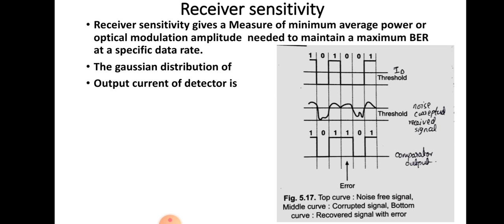A figure is shown here. The top curve represents the noise-free output from a hypothetical detector, where ID is marked as the threshold value used for comparison. The first curve is the original signal itself, which is a stream of 1s and 0s. The noise-free top curve represents perfect recovery of the transmitted signal, and the middle curve represents the noise-corrupted received signal, showing variation that represents the presence of noise.